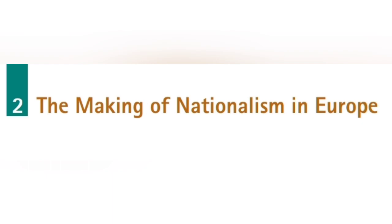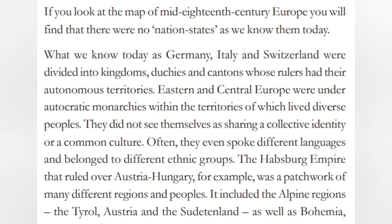Section 2: The Making of Nationalism in Europe. If you look at the map of mid-18th century Europe, we find that there were no nation-states as we know them today. What we know today as Germany, Italy, and Switzerland were divided into kingdoms, duchies, and cantons whose rulers had their autonomous territories. Eastern and central Europe were under autocratic monarchies, within the territories of which lived diverse peoples who did not see themselves as sharing a collective identity or a common culture — often they even spoke different languages and belonged to different ethnic groups.